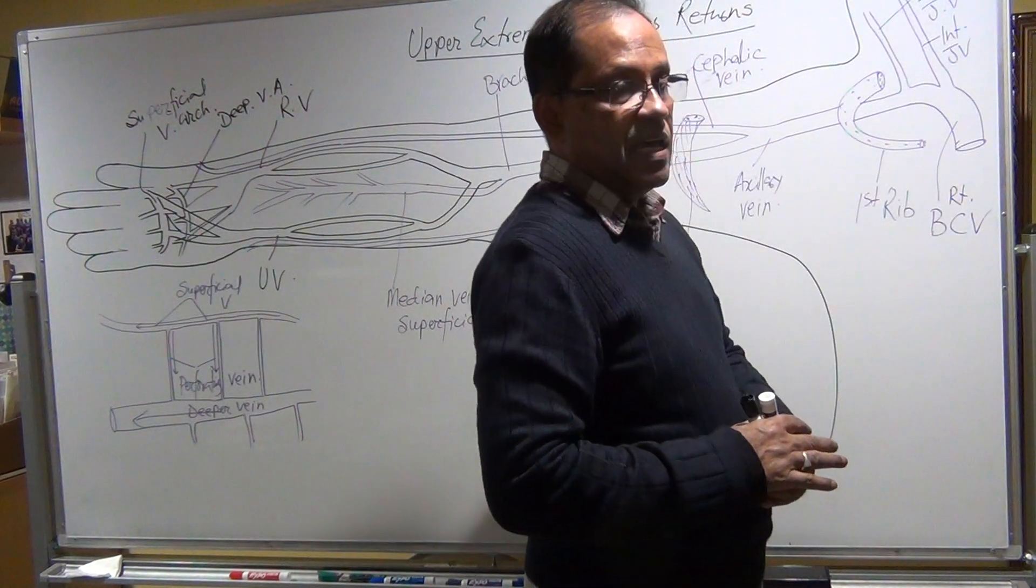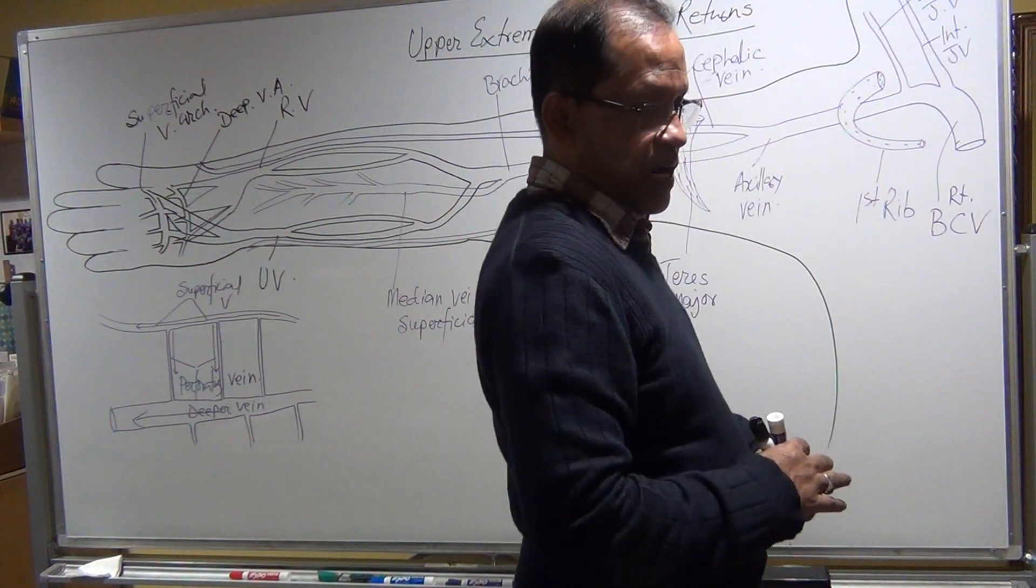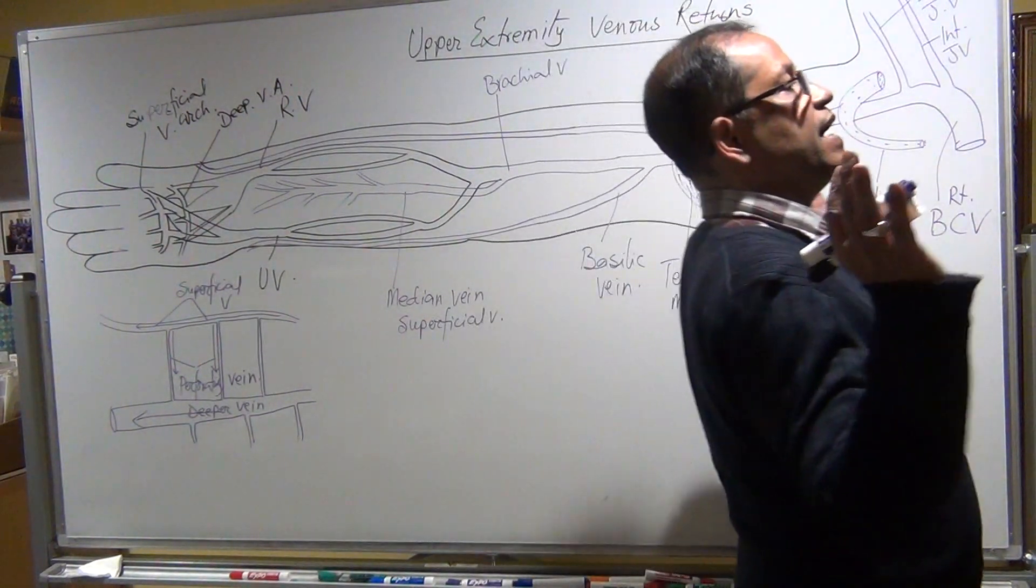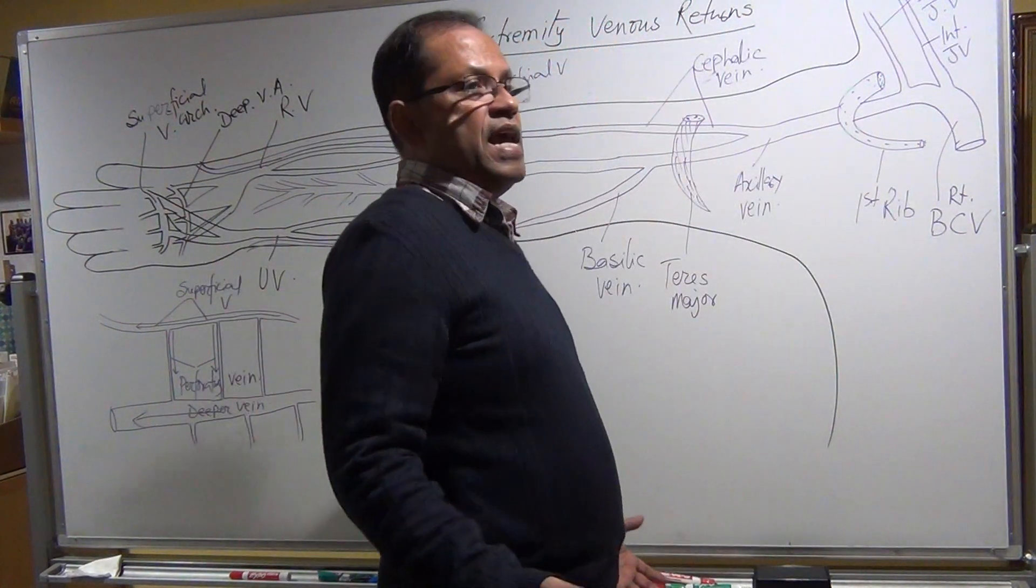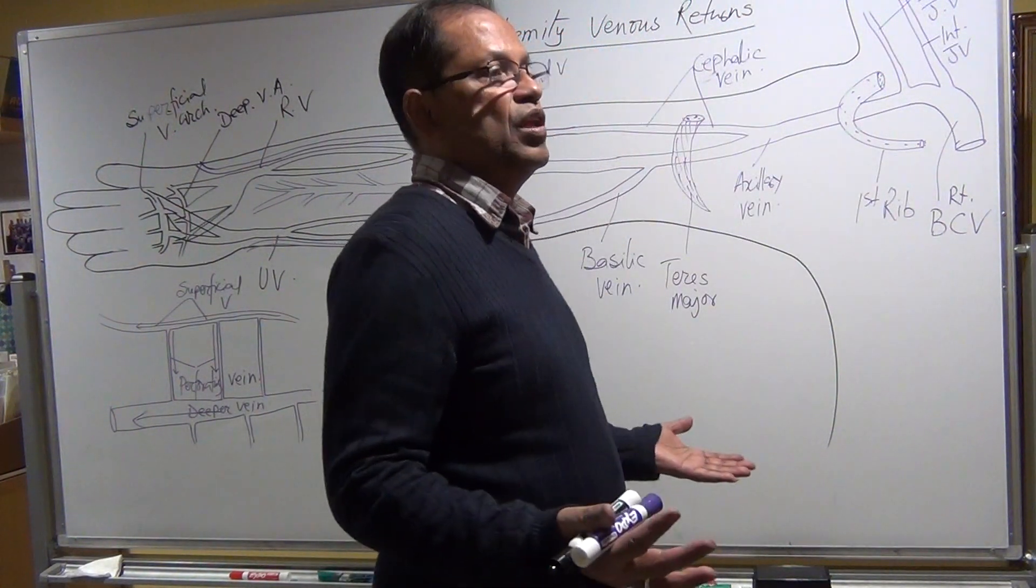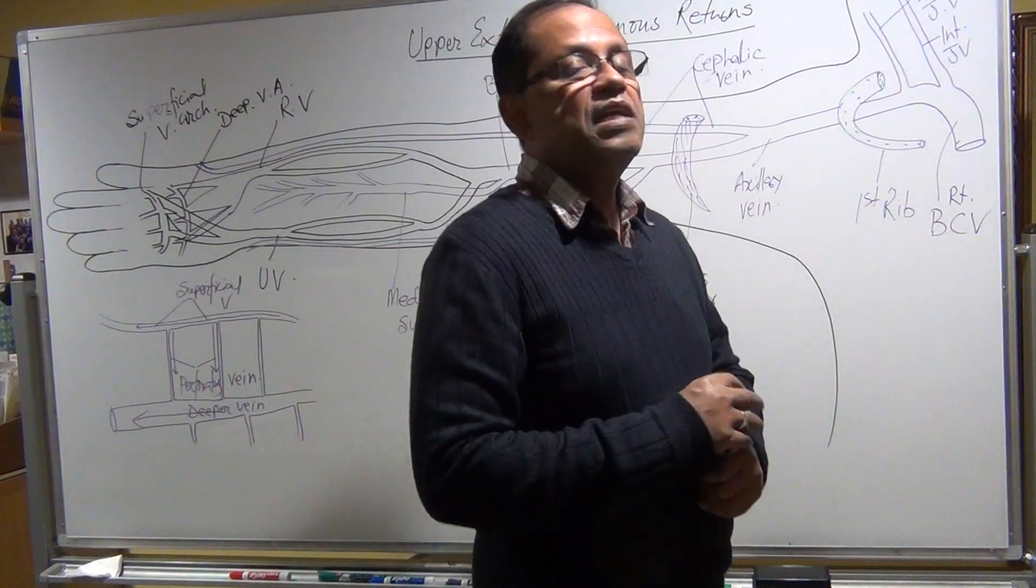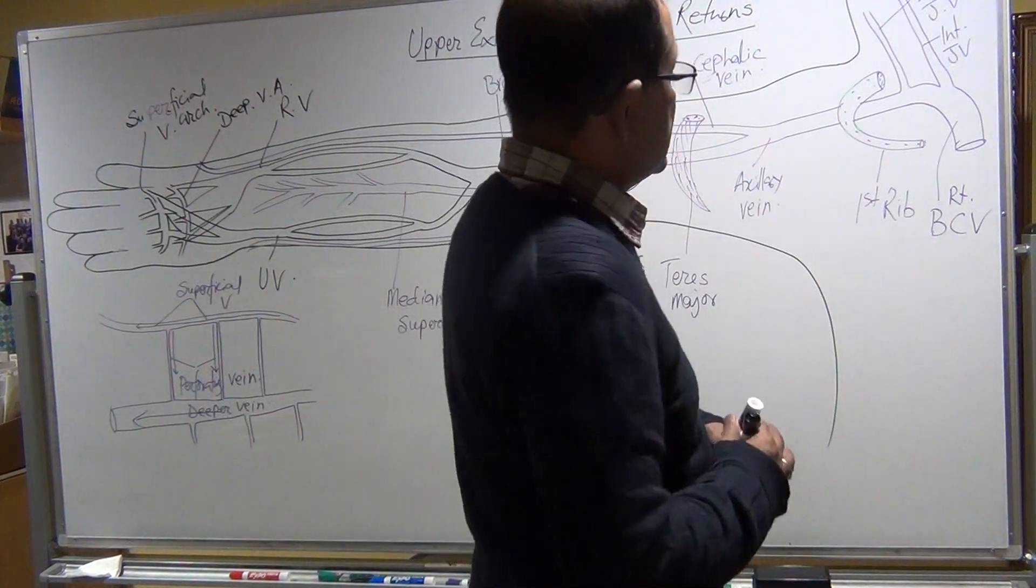even the coronary sinuses from the heart cannot drain their blood into the right atrium. The right atrium says 'I am full, my pressure is higher than you, I cannot take your blood.' So as a result,